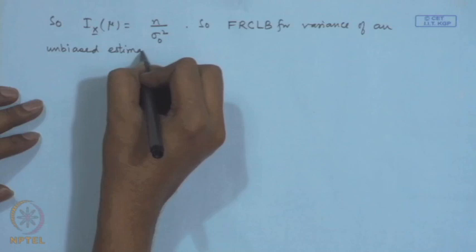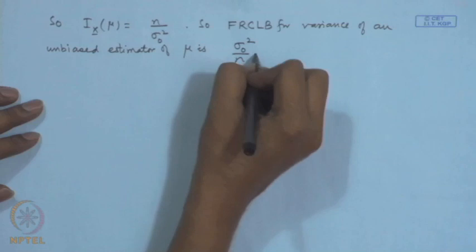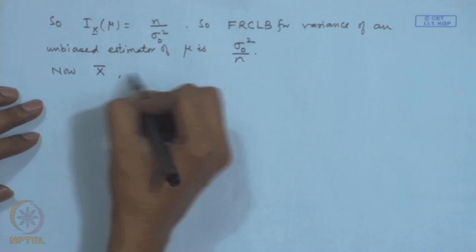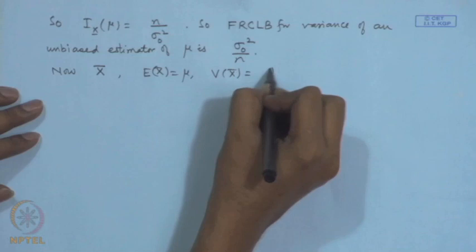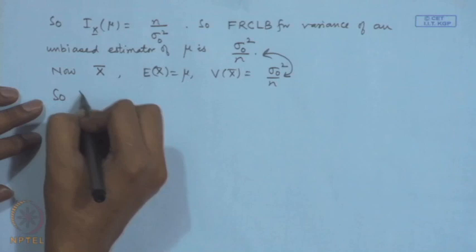If we consider x̄, then E[x̄] = μ and Var(x̄) = σ₀²/n, which equals the lower bound. Therefore, x̄ is the UMVUE of μ.